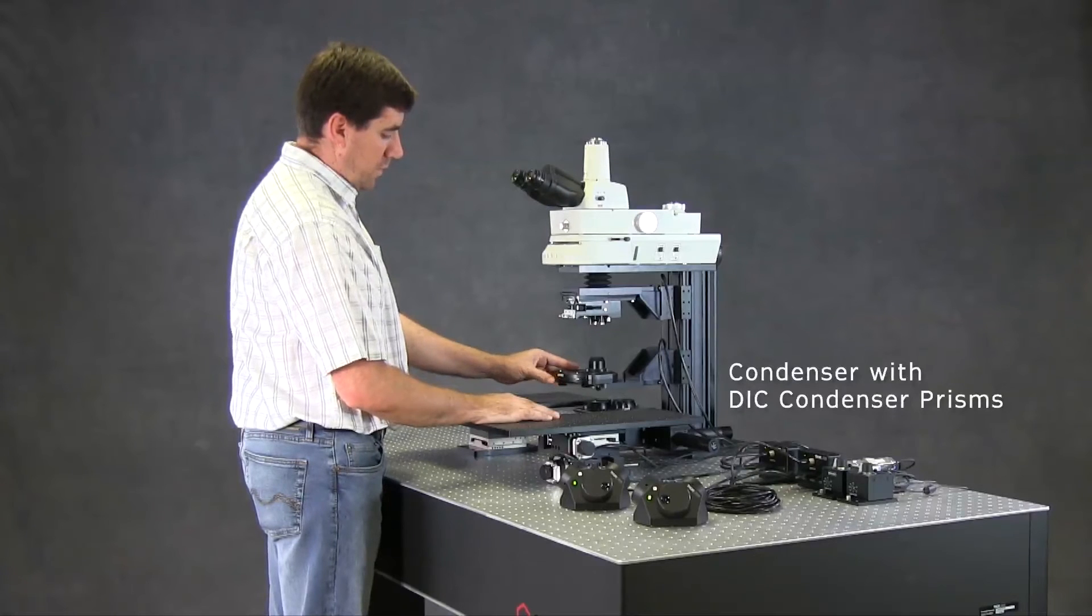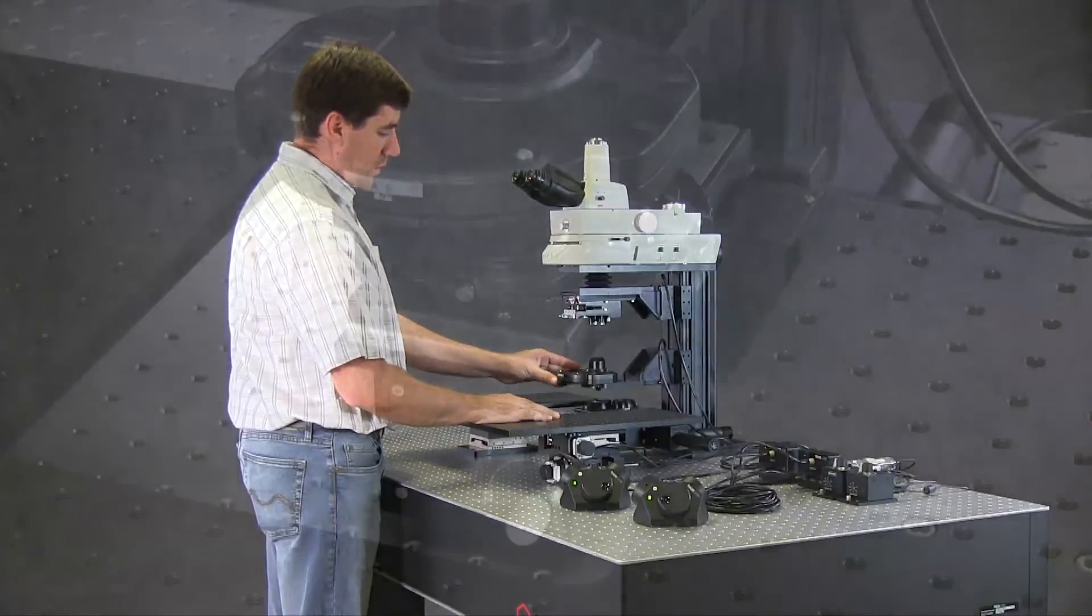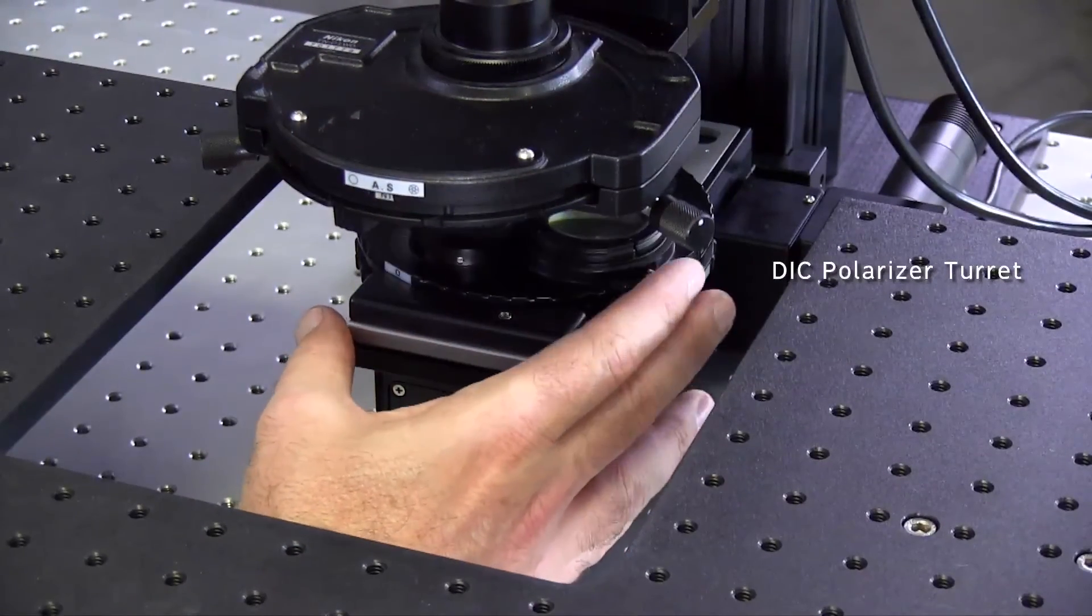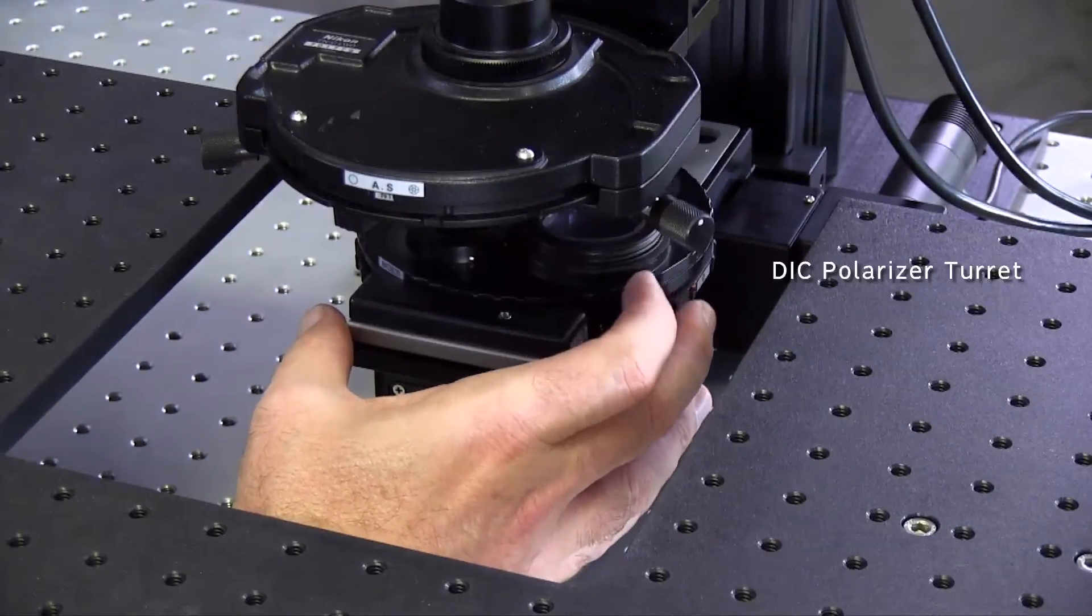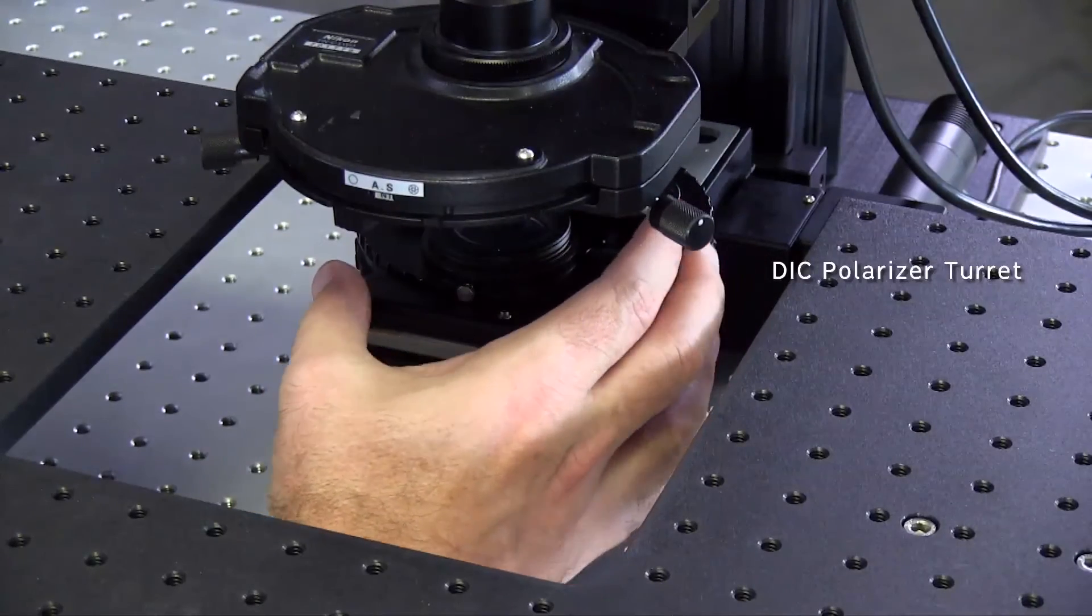The condenser includes N1 and N2 condenser prisms, and the polarizer turret includes visible and NIR polarizers. Neutral density filters are also mounted on the polarizer turret to fine-tune the illumination intensity.